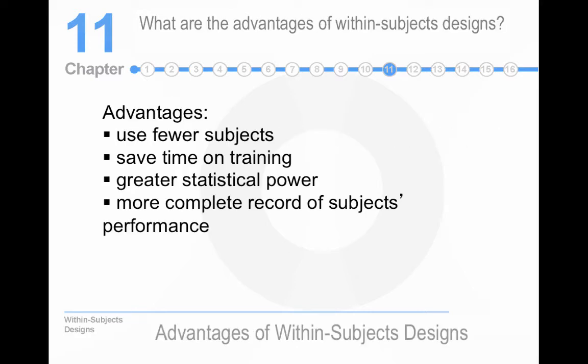What are the advantages of within subjects designs? You use fewer people. That's a huge advantage when you're trying to recruit people to be in your study. If training is required, you do save a lot of time in a within subjects design. The reason why is because you can train one group of people and then run them in every condition. Greater statistical power. Again, each person acts as their own control. It's a perfect matched design. And you get a more complete record of their behavior because you see them in every treatment condition.